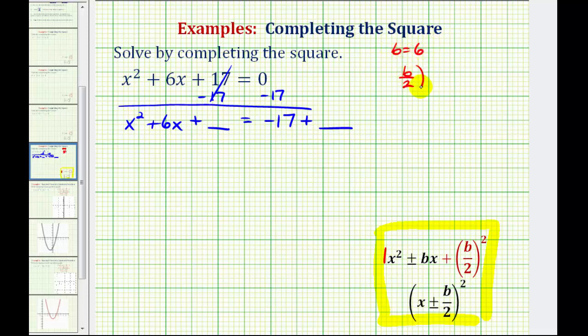So b divided by 2 squared is going to be 6 divided by 2, that's 3, squared, which is equal to 9. So we'll have to add 9 here to make this a perfect square trinomial. And of course, if we add 9 to the left side of the equation to maintain equality, we have to add 9 to the right side as well.